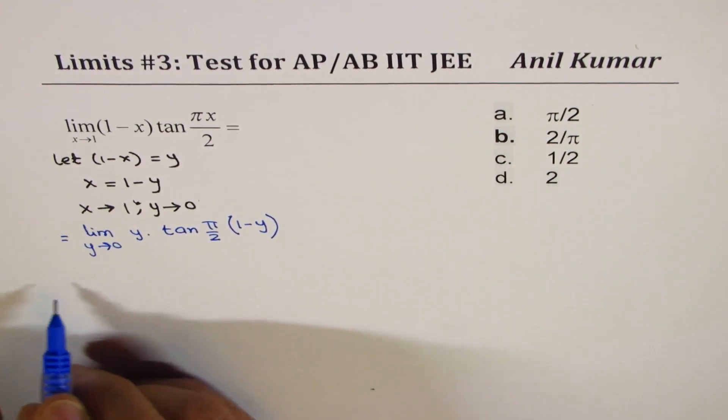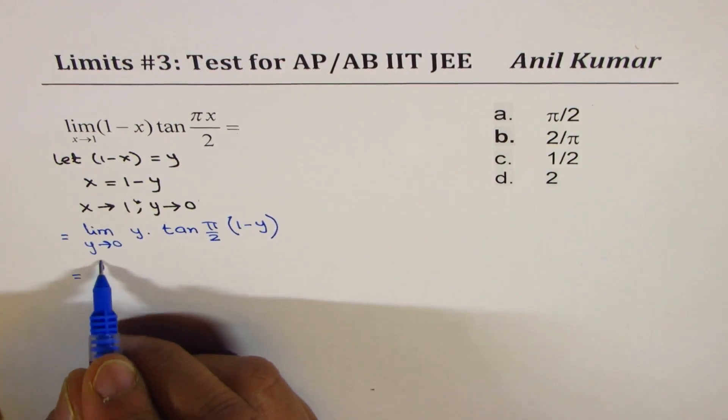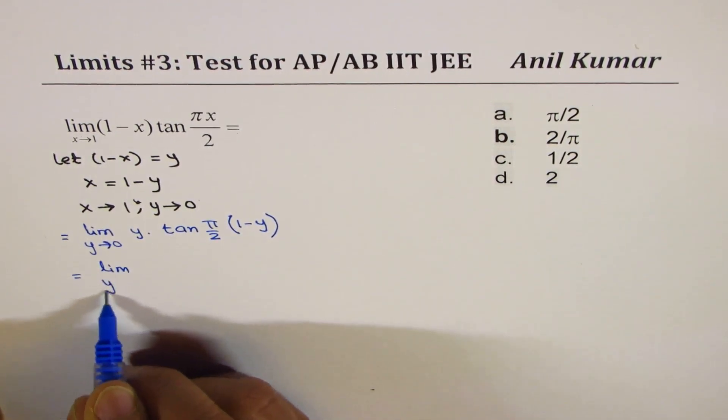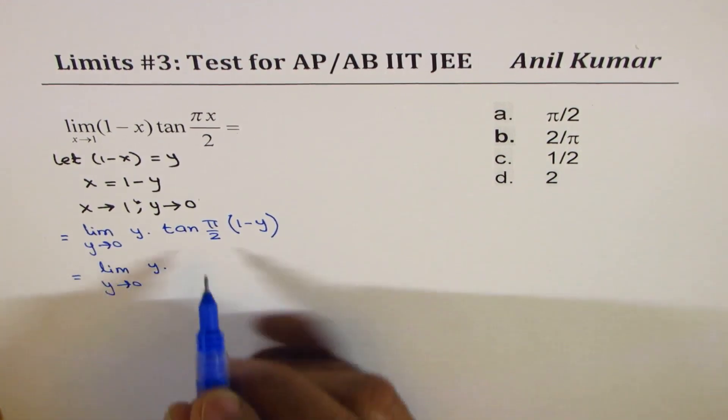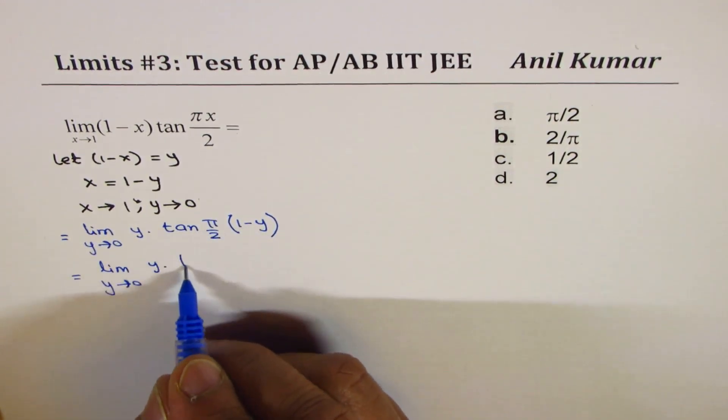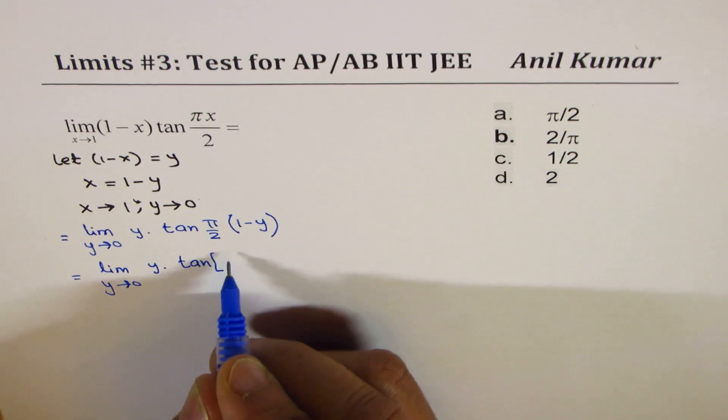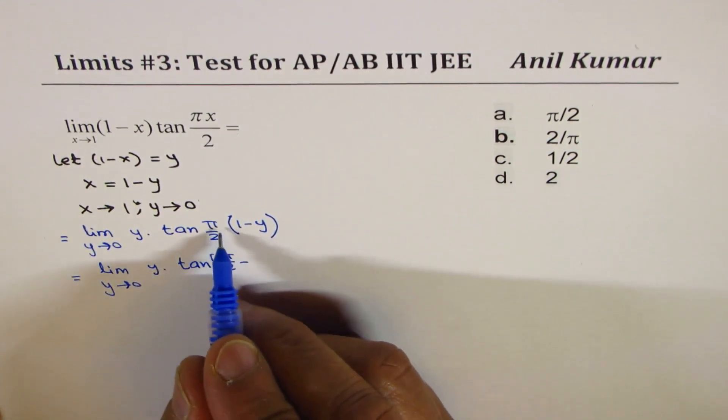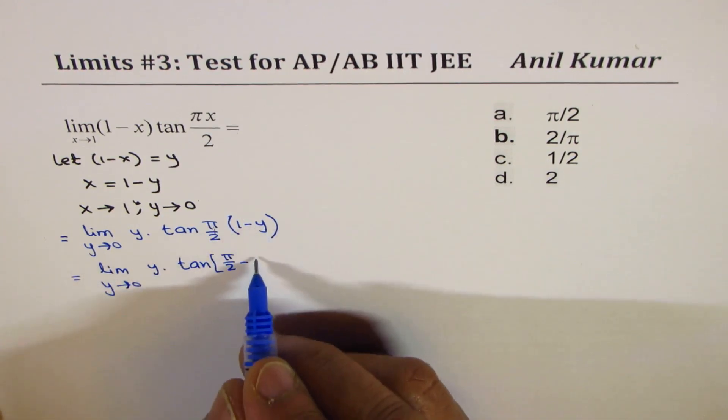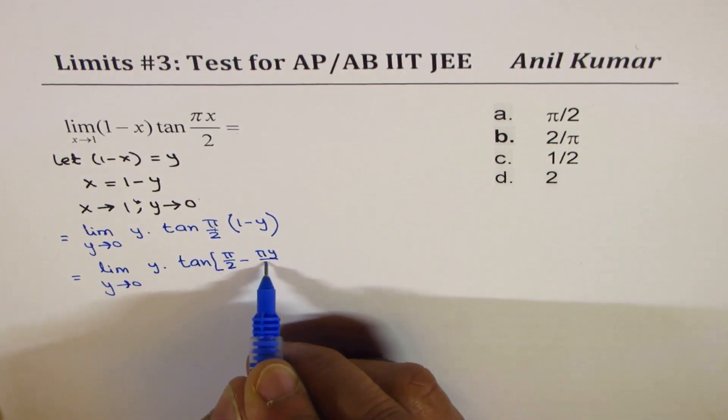So let's simplify this. Limit y approaches 0, this is y times, open the bracket, we get tan pi by 2 minus pi y by 2.